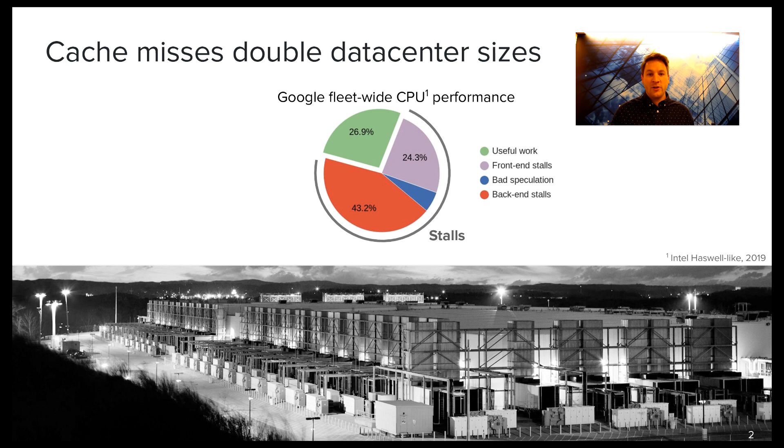If we look at this at data center scales like at Google, we find that up to 75% of CPU performance potential is lost to stalls, the majority of which come from instruction and data cache misses. If we could eliminate these cache misses, CPUs would easily be more than twice as performant, meaning we could build half as many general purpose data centers for the same performance we have today.